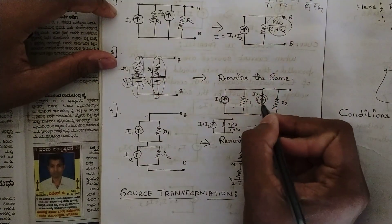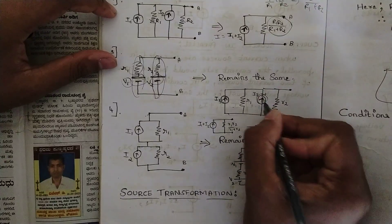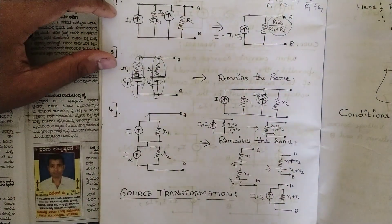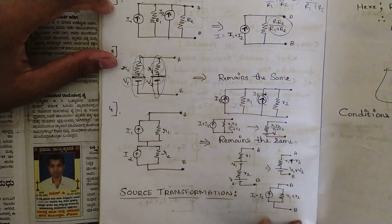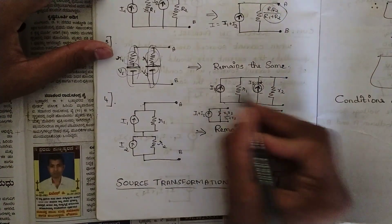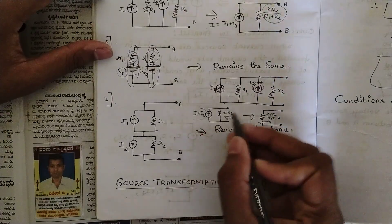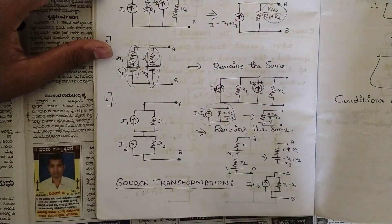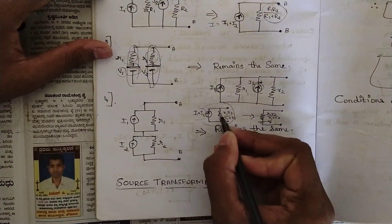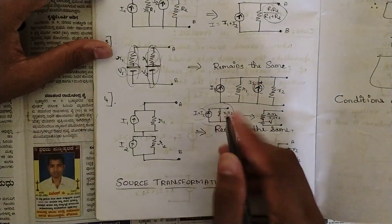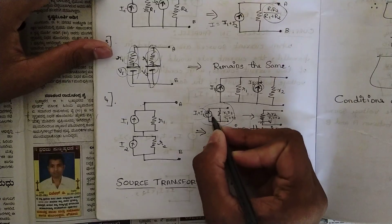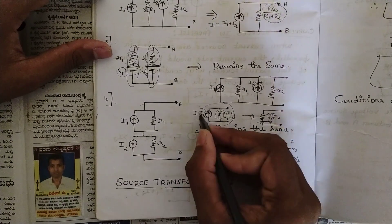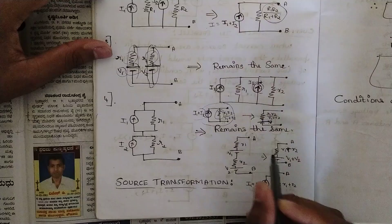V1 is replaced by current source I1 pointing upward, and R1 is now connected in parallel with I1. Similarly, V2 is replaced by current source I2 pointing upward with plus-minus polarity, and R2 is connected in parallel with I2. Now we have two current sources in parallel with the same direction — they add to give I1 + I2 — and two resistances in parallel giving R1R2/(R1+R2). Finally, this combined current source with parallel resistance is converted back to a voltage source with series resistance.